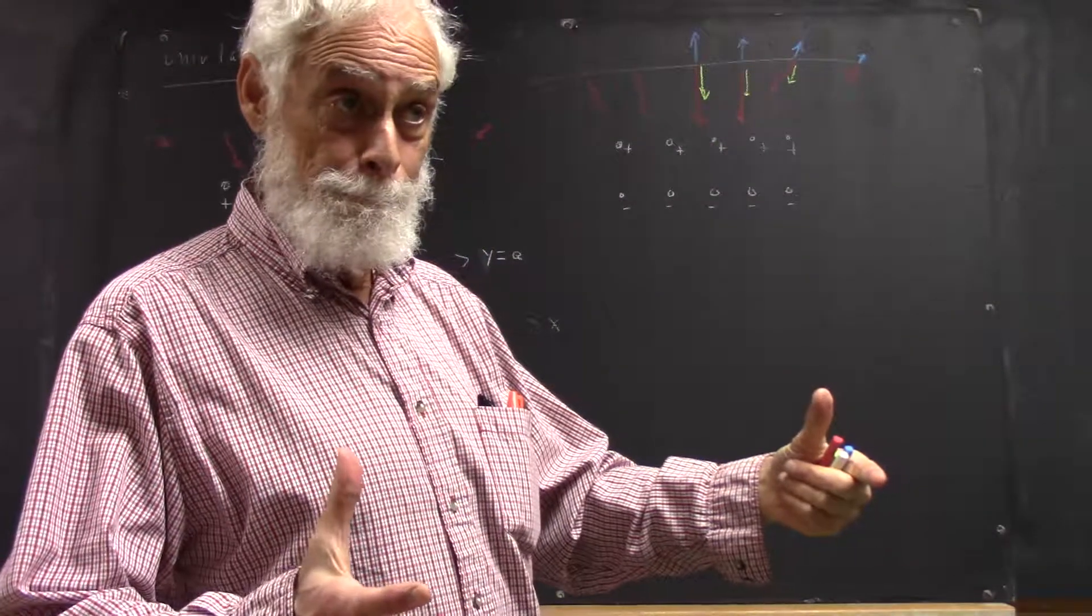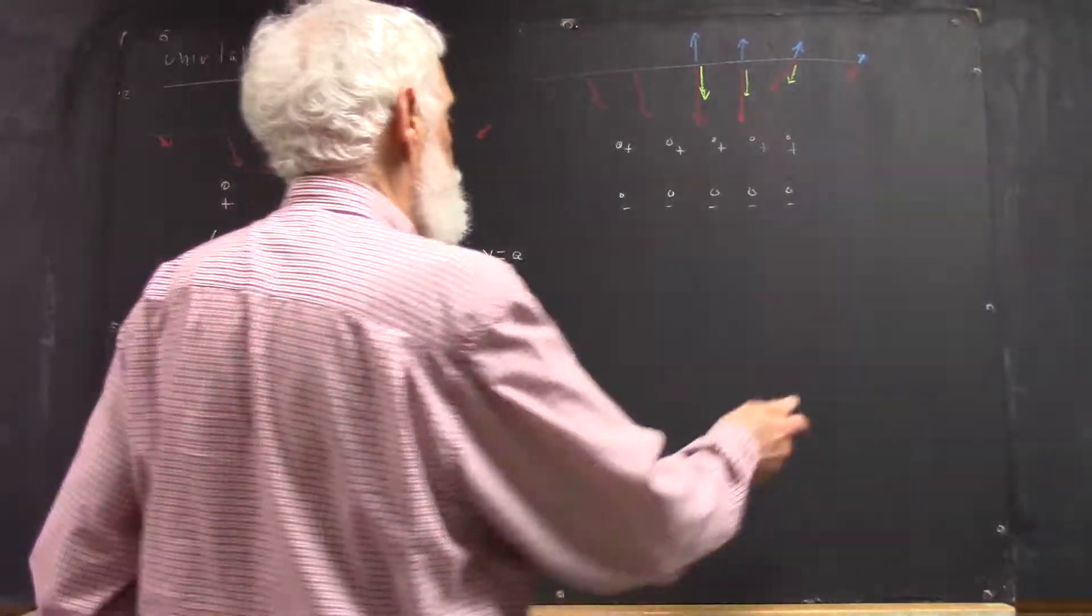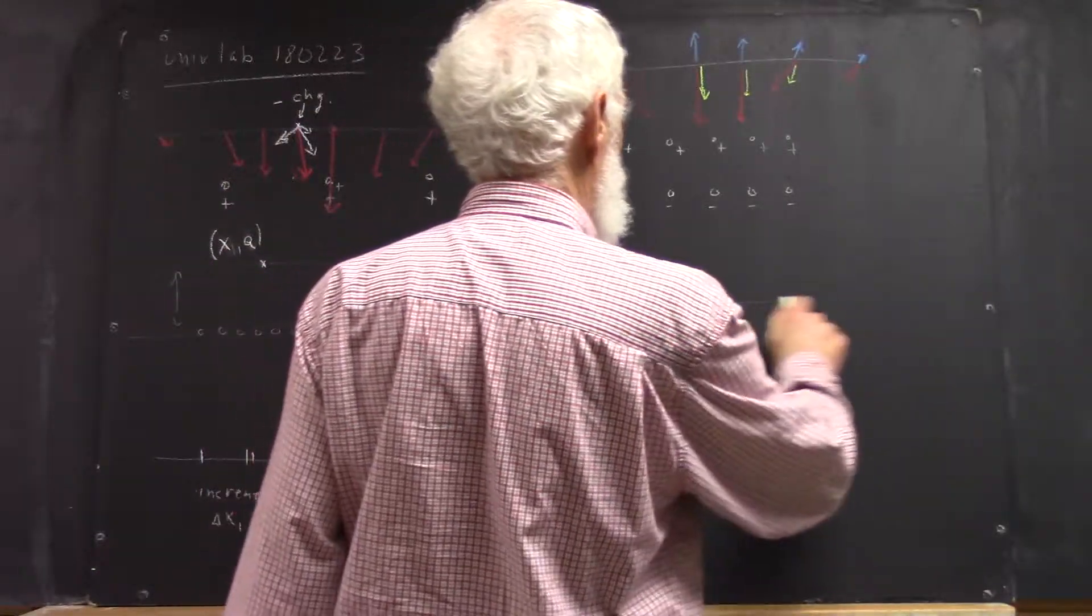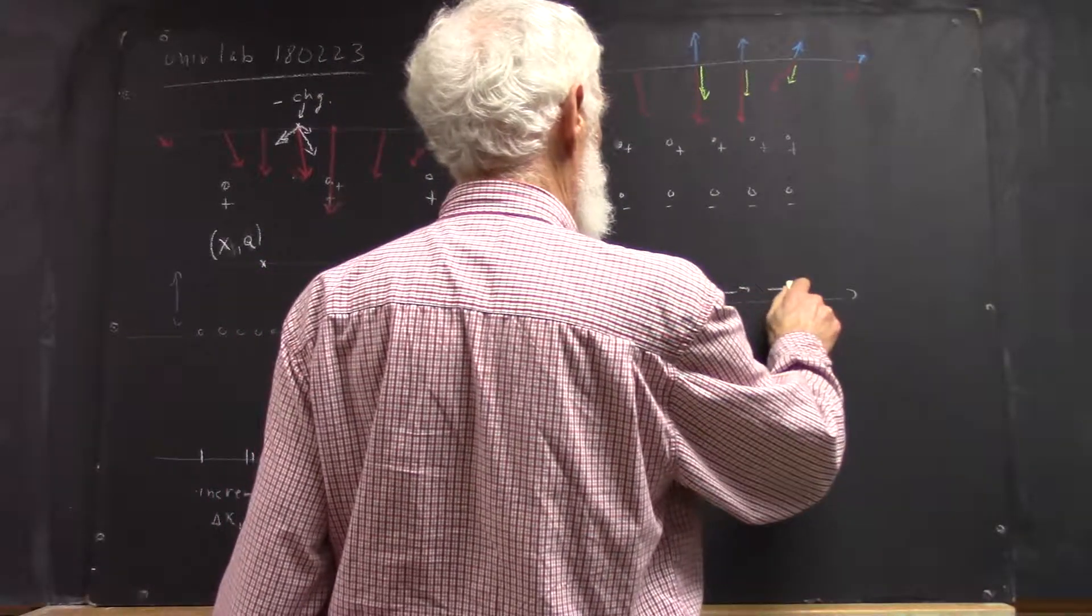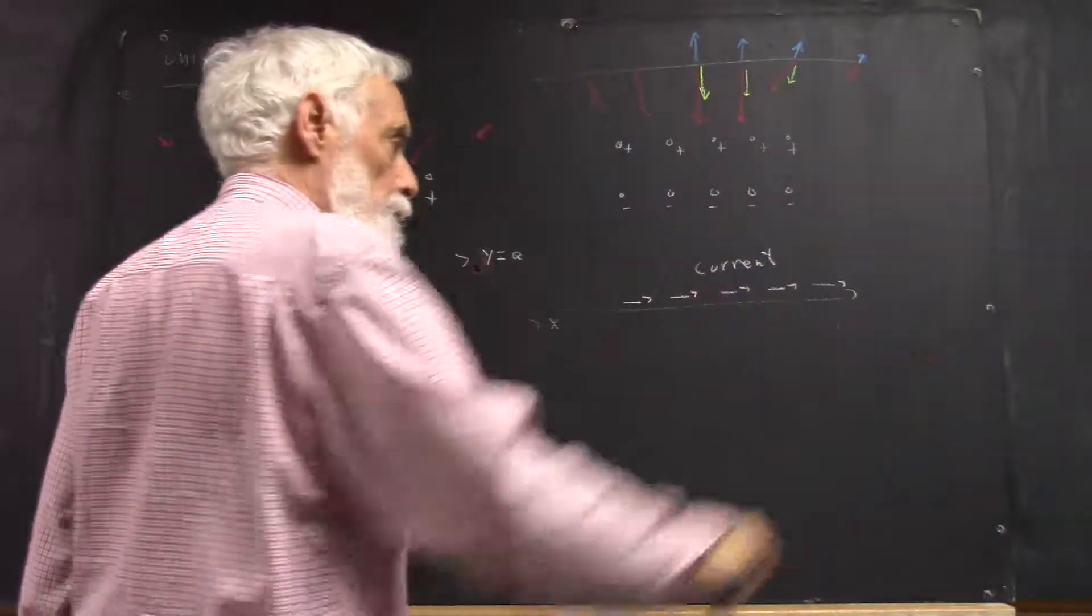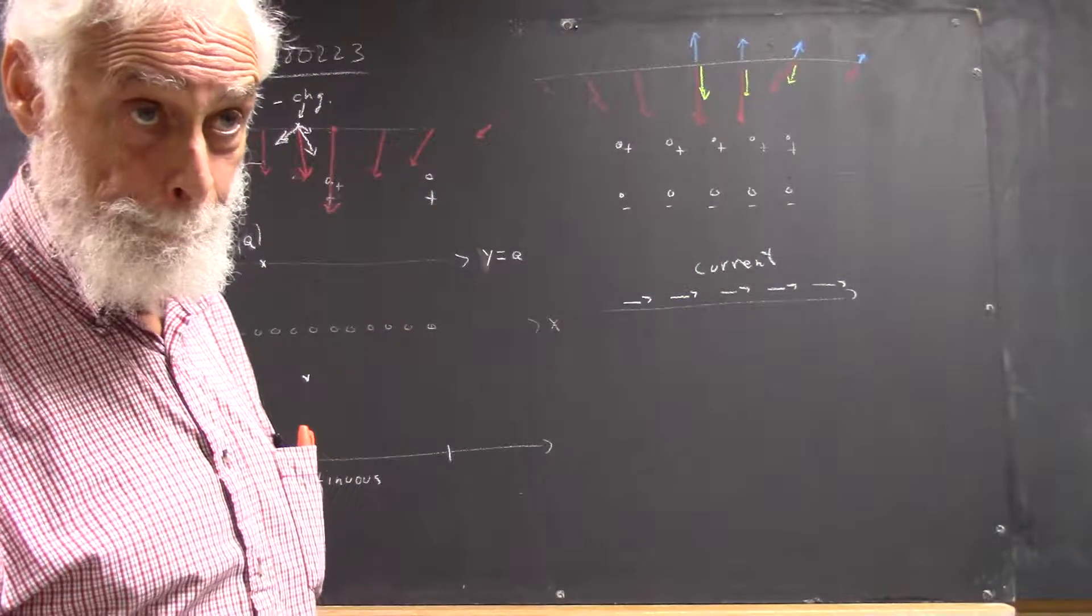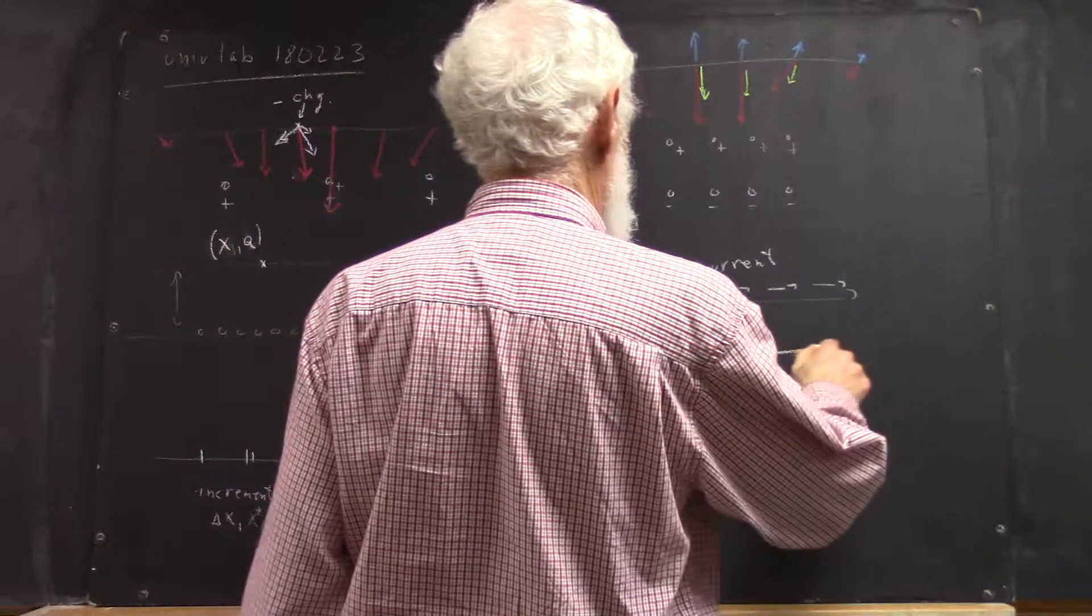Now what's happening is you have a current—electric current—through that aluminum strip.